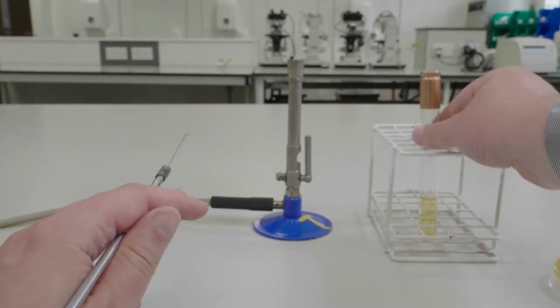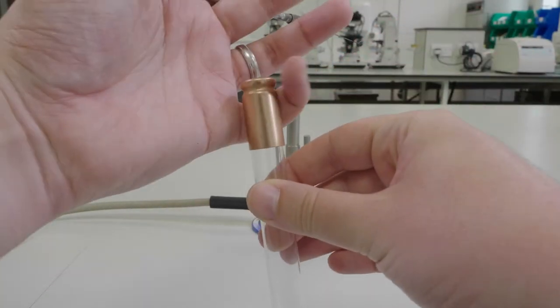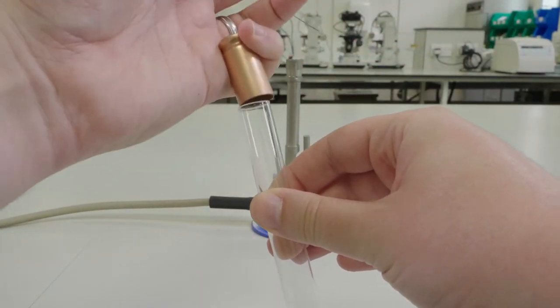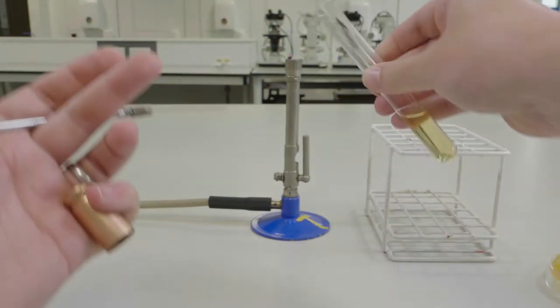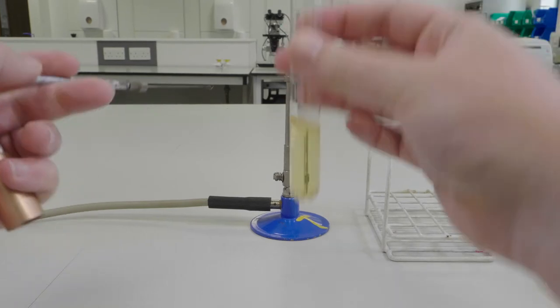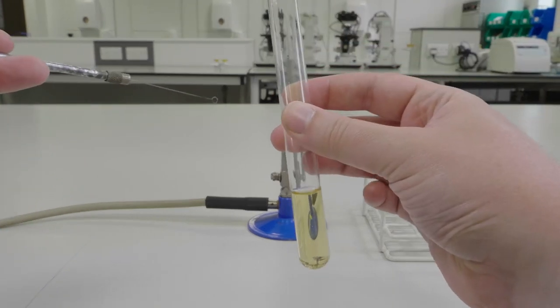Next, get your test tube containing sterile nutrient broth and remove the lid using the little finger of your dominant hand. Pass the end of the test tube through the Bunsen flame to kill any lingering organisms stuck to the glass.